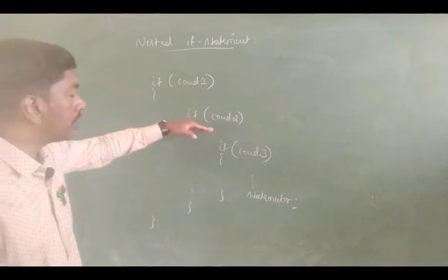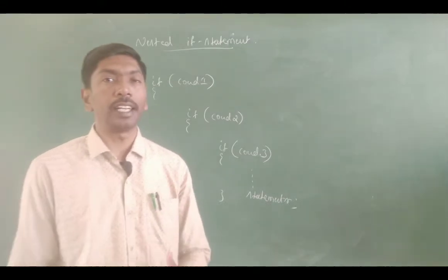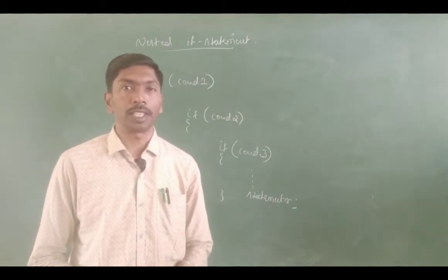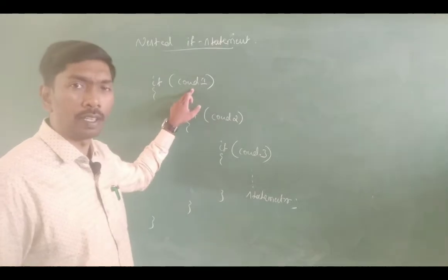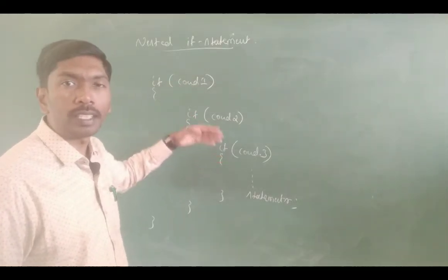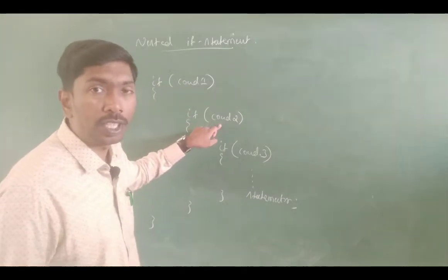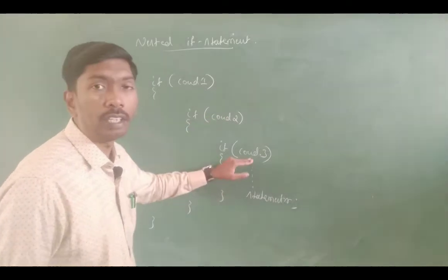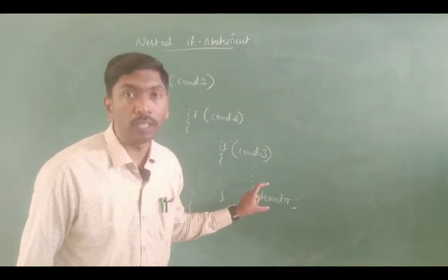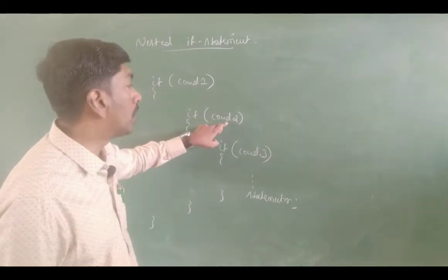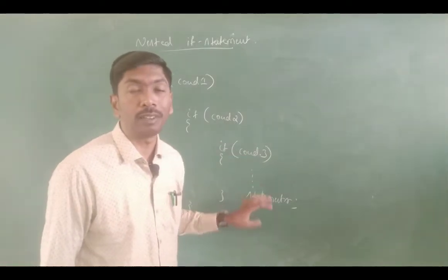One if can contain another if — this is called nested if. An if statement contains another if statement. Here is a condition: either it is true or false. If true, control enters; otherwise it does not. If condition 1 is true, it enters the block and checks condition 2. If condition 2 is true, it enters and checks condition 3. Only when all three conditions are true will that particular block execute; otherwise, execution does not happen.